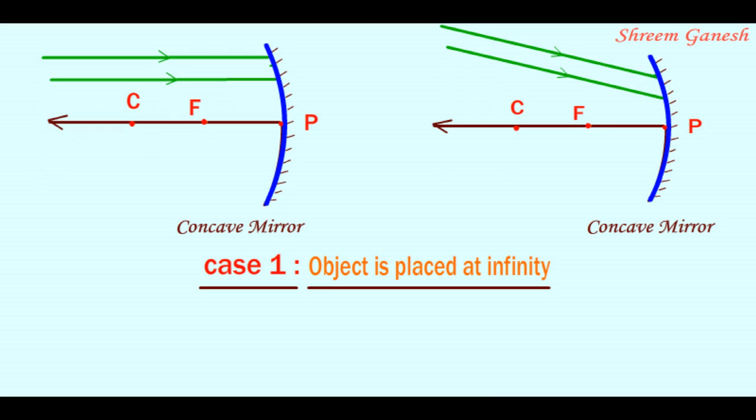If the parallel incident rays are parallel to the principal axis also, they will intersect at the principal focus.